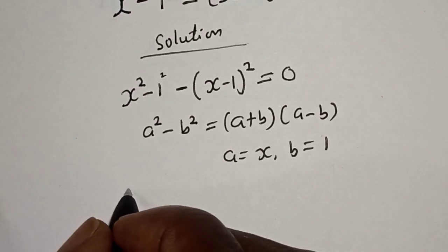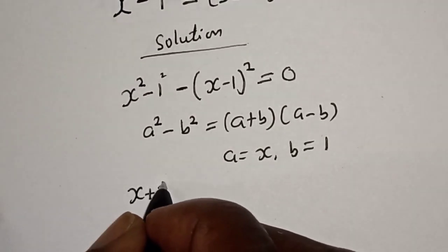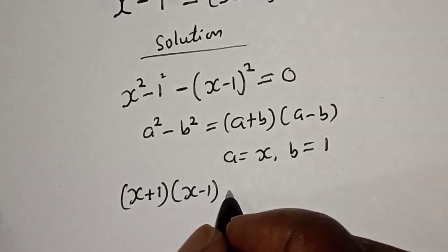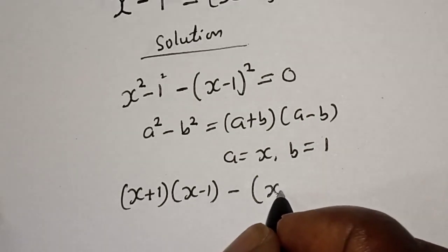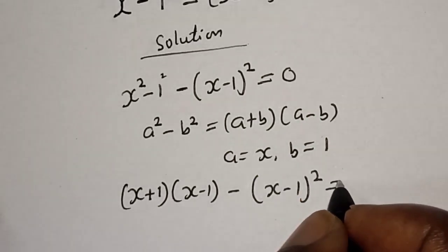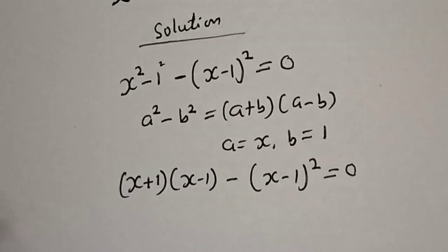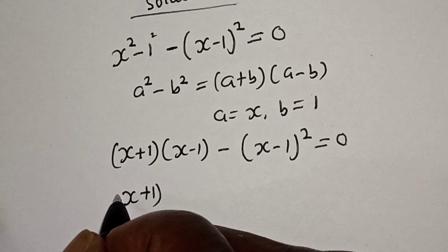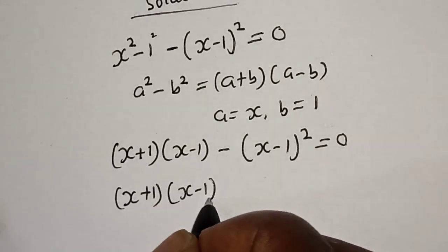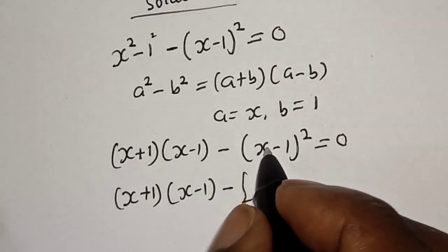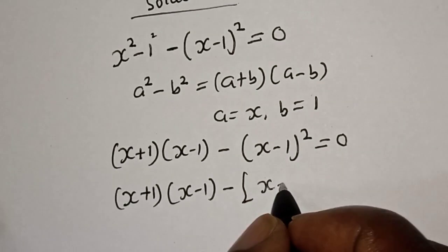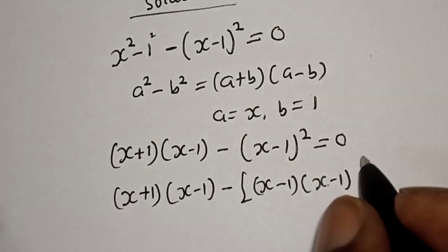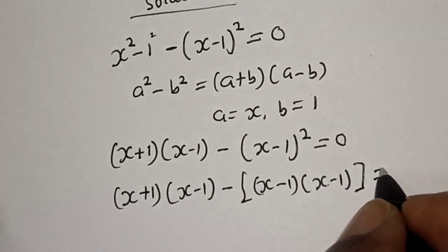So we have (x plus 1) multiplied by (x minus 1), then minus (x minus 1) squared is equal to 0. Then this is (x plus 1) multiplied by (x minus 1) minus. This (x minus 1) squared is same thing as (x minus 1) multiplied by (x minus 1), is equal to 0.